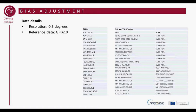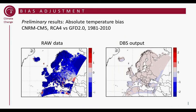On the right side you see the Euro 44 core CORDEX data, with the GCM and RCM models. Here are some preliminary results — just a quick view of how the output could look. On the left hand side you have the raw data output from the climate model, and on the right hand side you have the DBS output of the bias adjustment, over the Euro 44 domain. The plots show the biases compared to GFD, and you can see the climate model has quite a large bias in temperature, but the DBS managed to reduce the bias quite a lot.